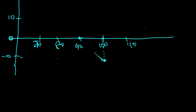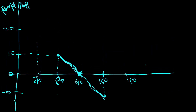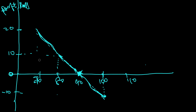Further when the price goes to 80, he is incurring 10 profit. When it goes to 70, the graph goes further down-left showing a profit of 20. This is graphically how payoff is drawn for put options.